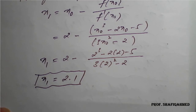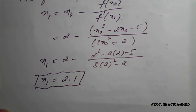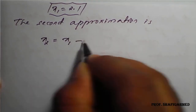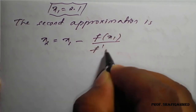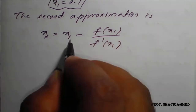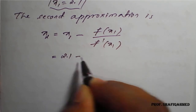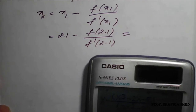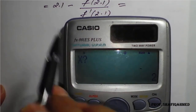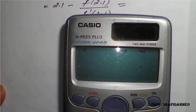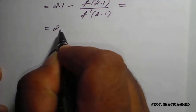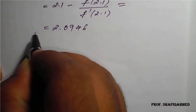Once we have the first iteration we continue until we reach a near-converged answer. The second approximation is x2 = x1 minus f(x1) divided by f dash(x1), i.e., 2.1 minus f(2.1) divided by f dash(2.1). Using the stored calculator formula with x = 2.1 gives 2.09456..., which rounds to 2.0946. So x2 = 2.0946.